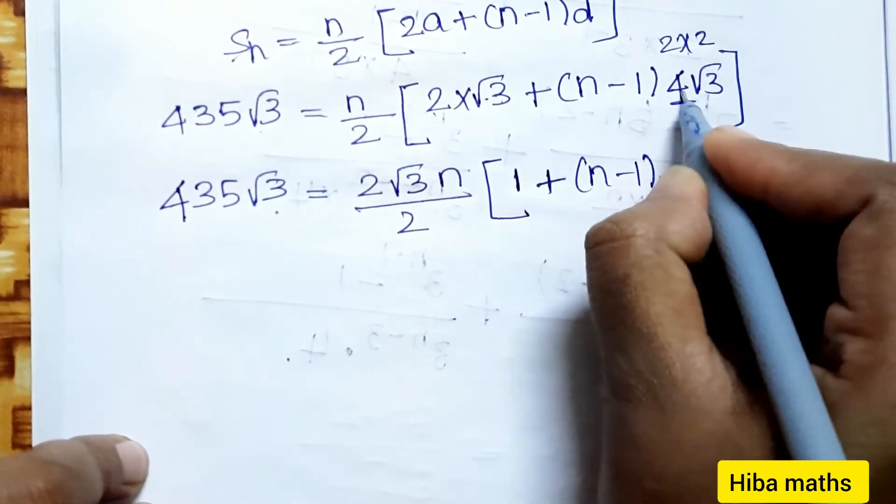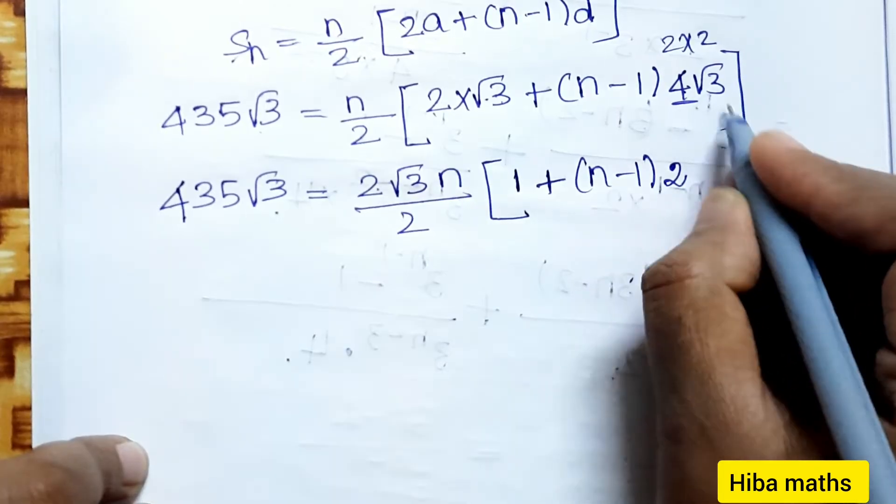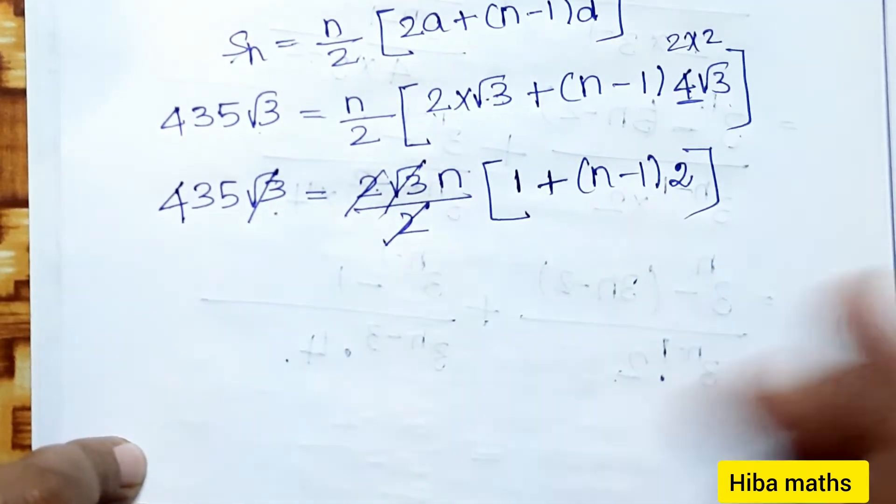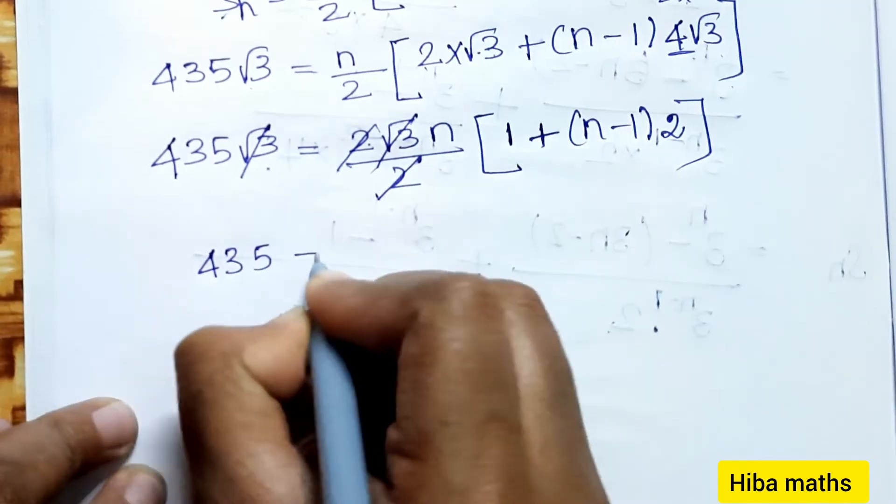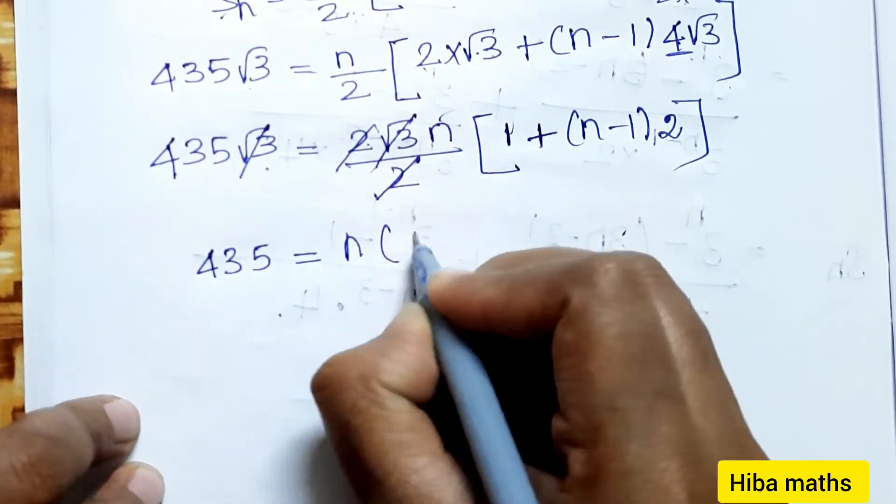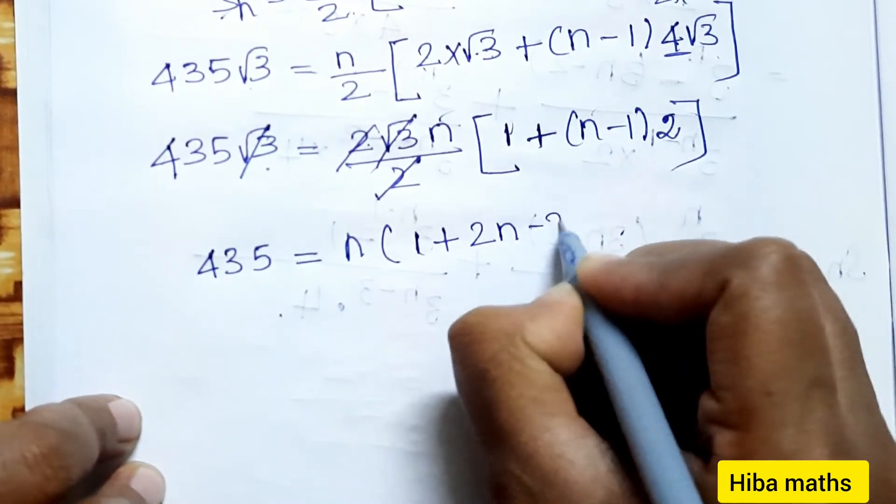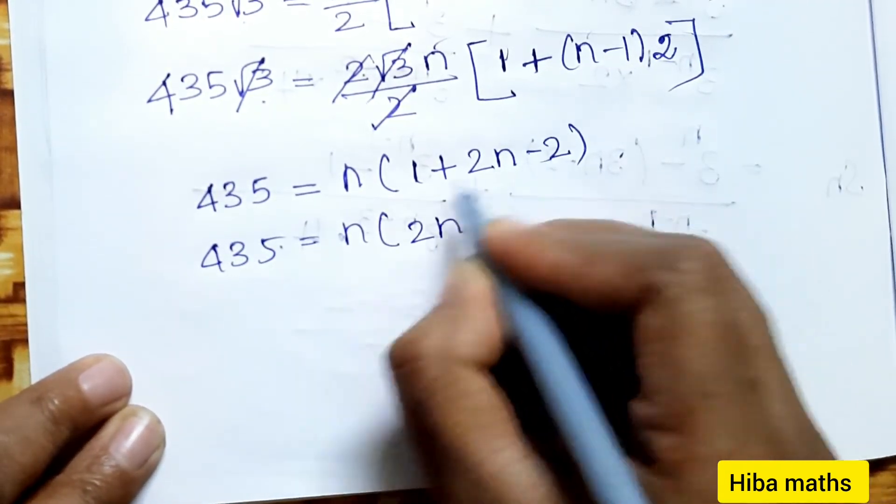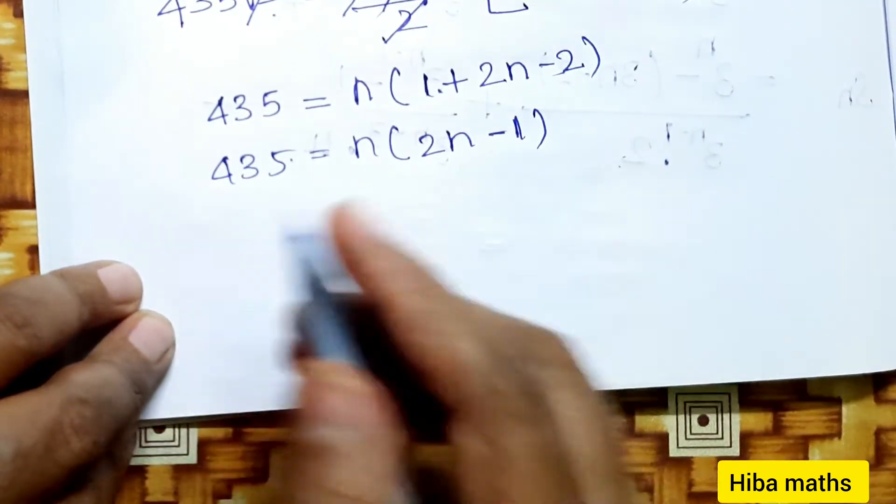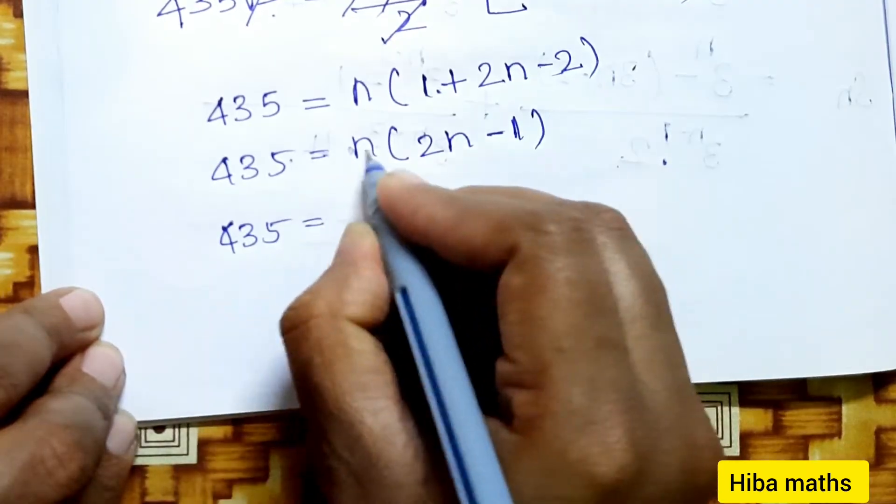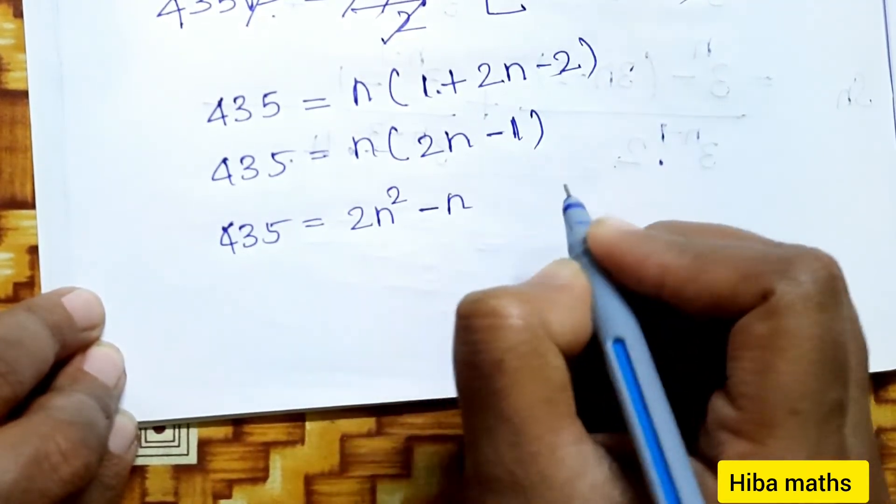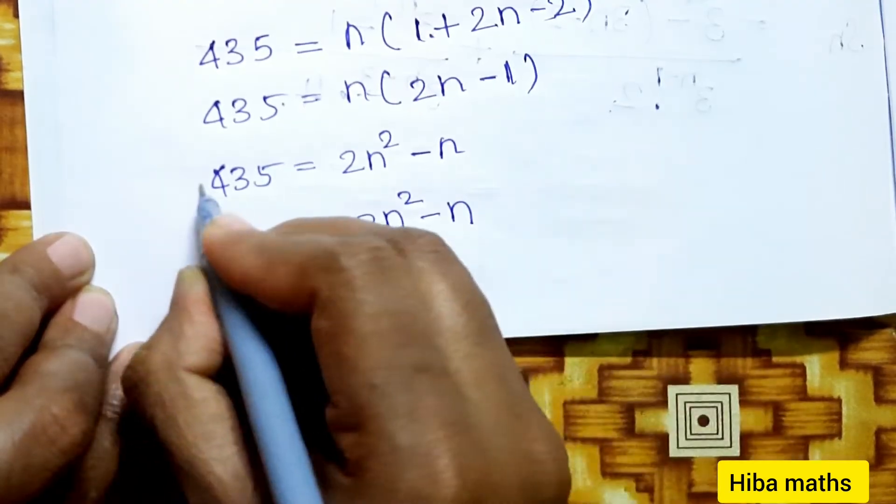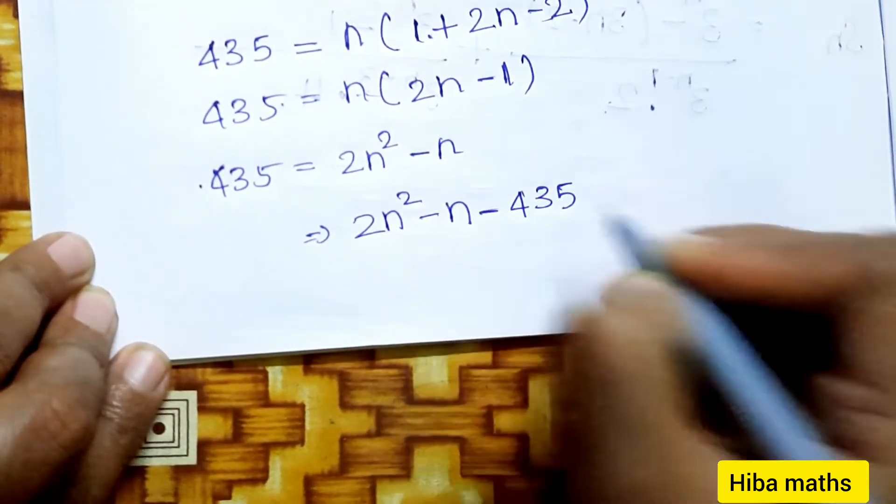Taking out common √3 and simplifying, 435 = n/2[2 + (n-1)×4]. This gives 435 = n/2[2 + 4n - 4] = n/2(4n - 2) = n(2n - 1). So 435 = 2n² - n, which gives 2n² - n - 435 = 0.